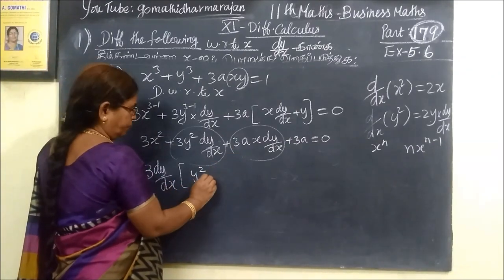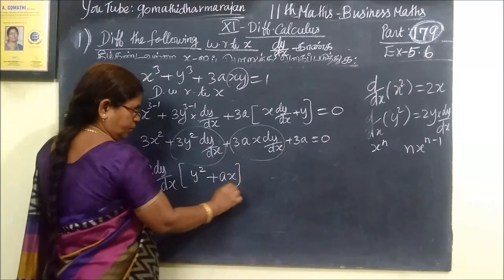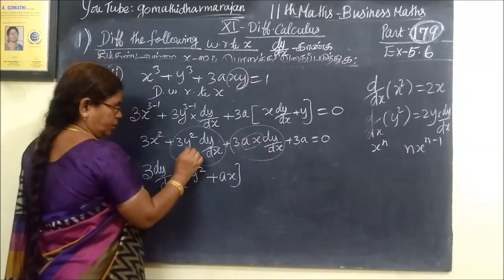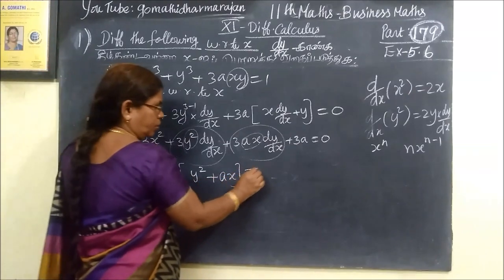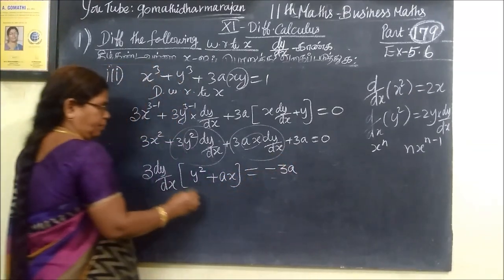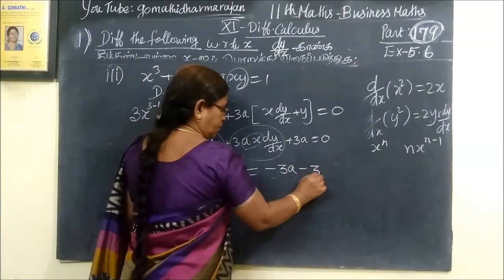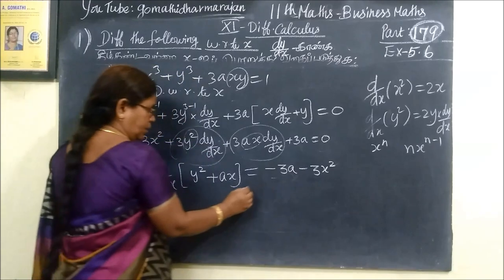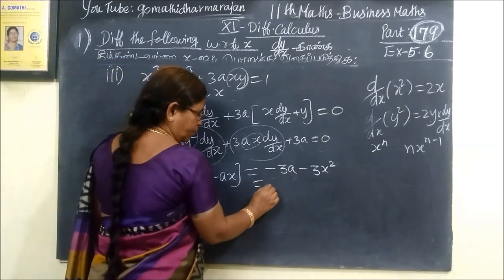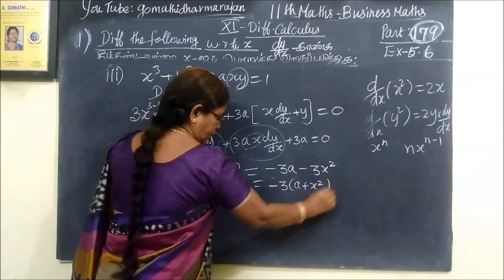Here is x. This is y squared, plus x. Minus 3a plus x squared.